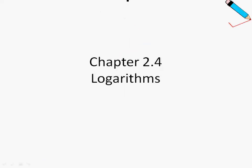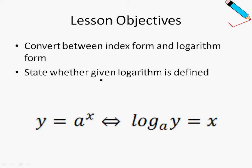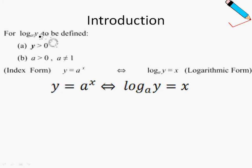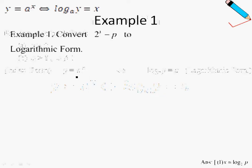Hi guys, welcome to probably the most interesting part in this chapter, which is on logarithms. I don't want this word to scare off any of you, because this is probably one of the most interesting chapters in the entire additional mathematics syllabus. The most important thing is to identify your variables for your index form and logarithmic form. This is called the index form and this is called the logarithmic form. For a logarithmic function to be defined, these conditions must be met: y must be greater than 0, a must be greater than 0, and a cannot be 1.